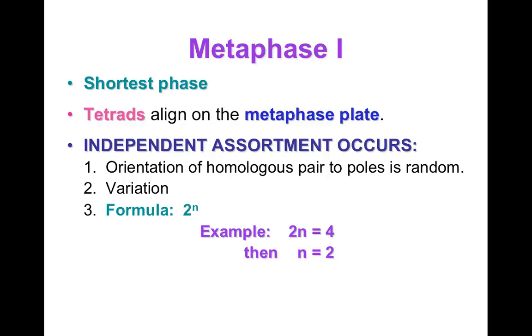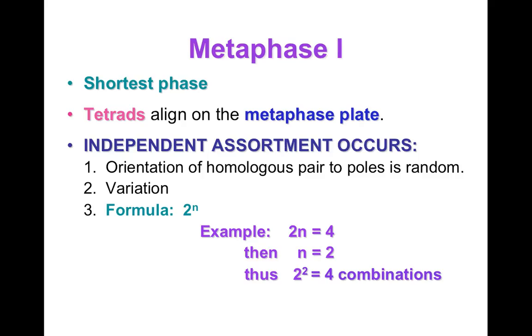That doesn't seem like a big deal until you think about the fact that we have 23 chromosomes. In each one, we have the possibility of getting one or the other. Two to the 23rd, if you do that calculation, is millions of possibilities. So that gives us lots of genetic variation, which means that's why you don't look exactly like your parents.